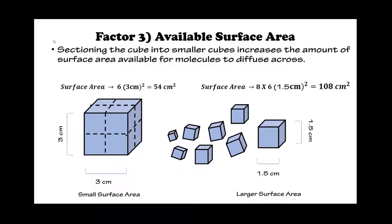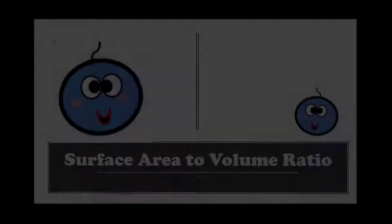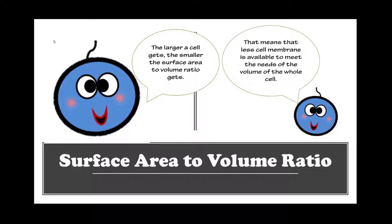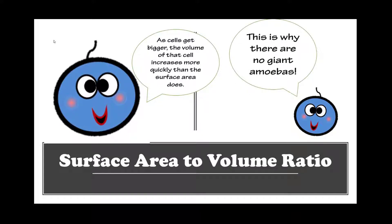When we section a cube into smaller cubes, we increase the surface area available for molecules to diffuse across greatly. Surface area to volume ratio: the larger a cell gets, the smaller the surface area to volume ratio gets. That means less cell membrane is available to meet the needs of the volume of that whole cell. As cells get bigger, the volume increases more quickly than the surface area does. This is why there are no giant amoebas.